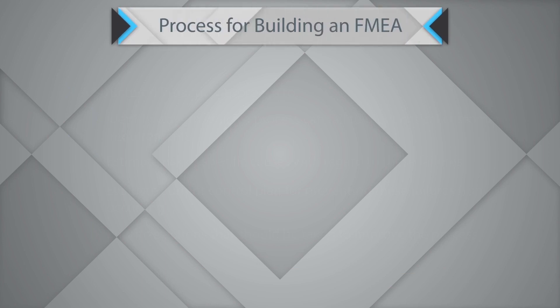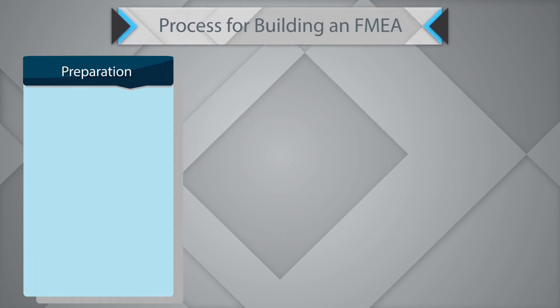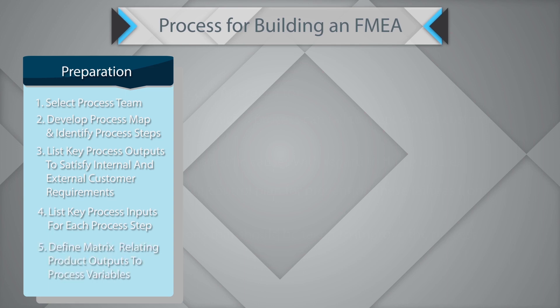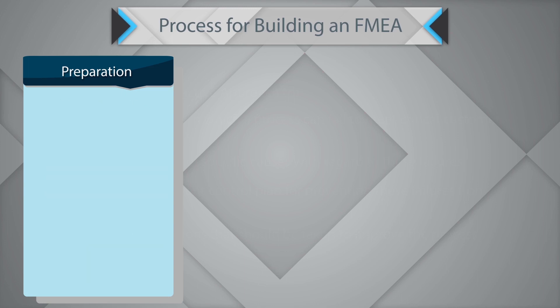Now let's understand how to build the FMEA. In the preparation stage, start with selecting the process team. Develop the process map and identify the process steps. List down the process outputs to satisfy internal and external customer requirements. List key process inputs for each process step. Define a matrix relating product output to process variables, and rank inputs according to their importance.